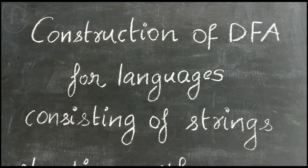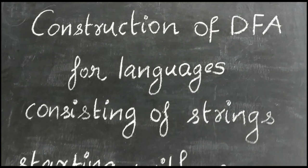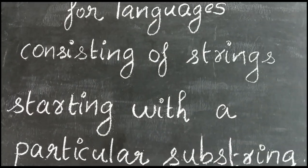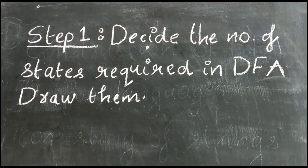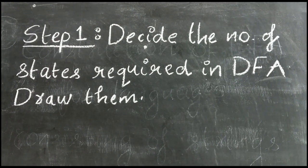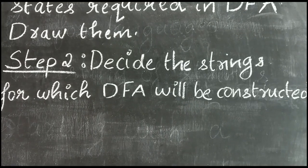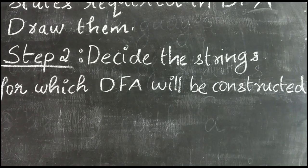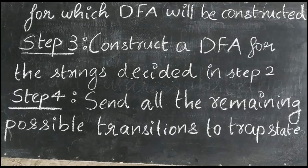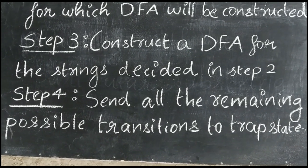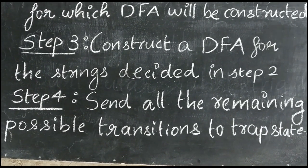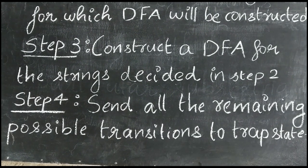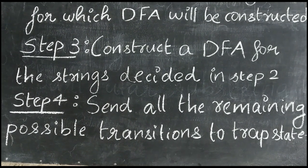I am going to show you the construction of DFA for languages consisting of strings starting with a particular substring. We will do it in 4 simple steps. Step 1: decide the number of states required in DFA and draw them. Step 2: decide the strings for which DFA will be constructed. Step 3: construct a DFA for the strings decided in step 2. Step 4: send all the remaining possible transitions to the trap state.